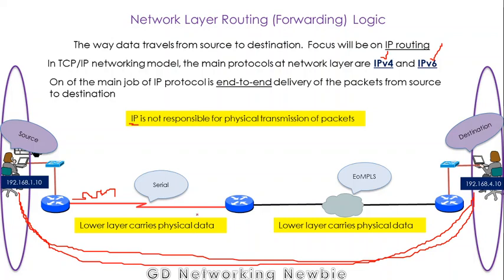You can see from this router to this router we have a serial connection, and from this router to this router we have another WAN connection. So there are two different wide area network connections, but how the data travels onto these different media is the responsibility of the data link layer and the physical layer. IP is concerned only with the end-to-end delivery.